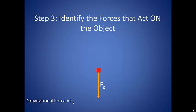You might notice that the log does not continue to fall towards the center of the Earth. That is because the solid ground is in the way and is exerting force upwards on the log. This is referred to the normal force and is shown as an F sub N.